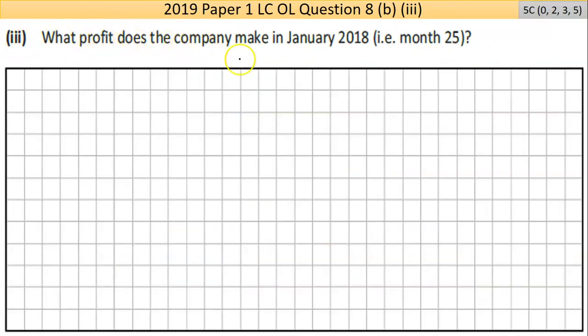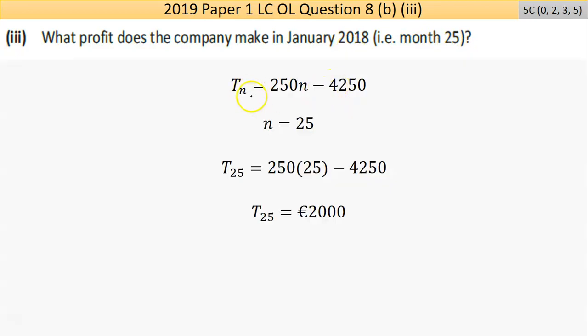Now part three here says, what profit does the company make in January 2018, so in month 25, they give me that hint. So I have just previously found an expression to show the profit in every month if that model holds. It's a linear relationship. And I'm also told that it's month 25 I'm concerned with. So if I put 25 in instead of the n, there was two unknowns, I was told one of them. Now there's one unknown. Put it through the calculator and I work it out. I end up with the answer of €2,000 in that 25th month.